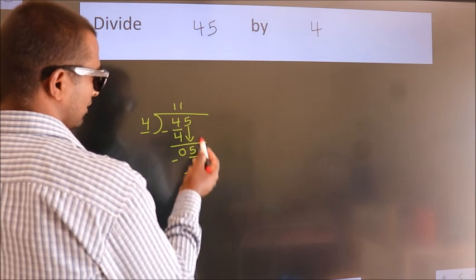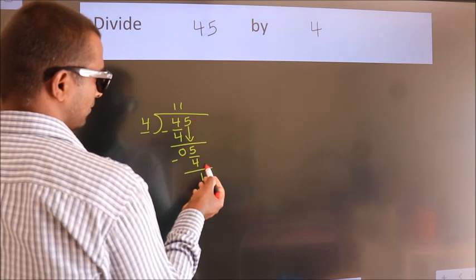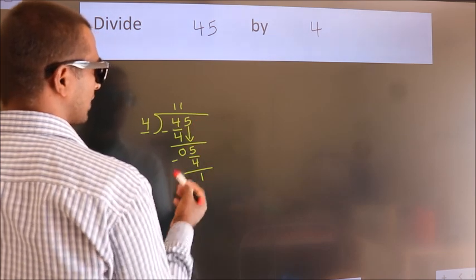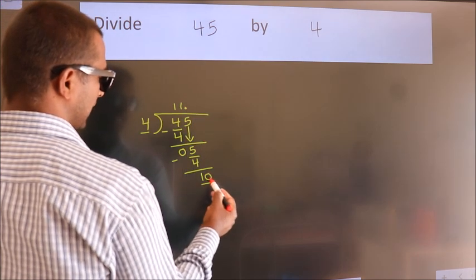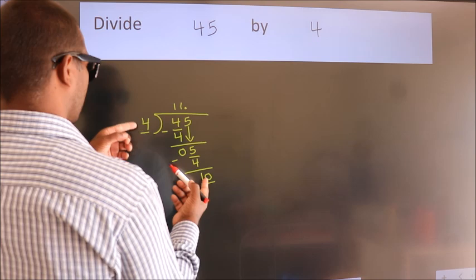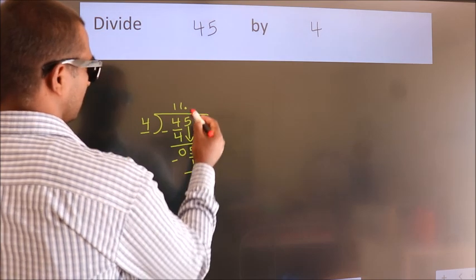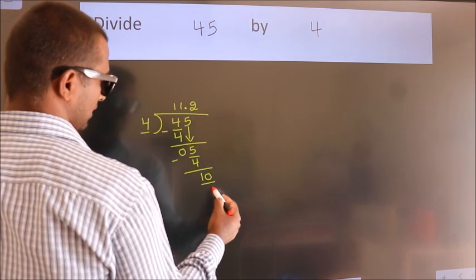After this, no more numbers to bring down. So what we do is we put a dot and take 0, so 10. A number close to 10 in the 4 table is 4 2s, 8.